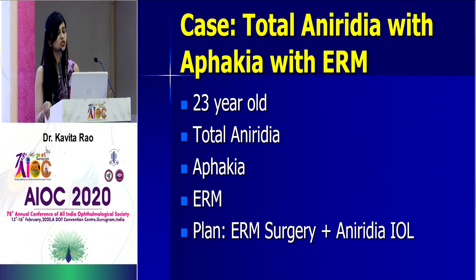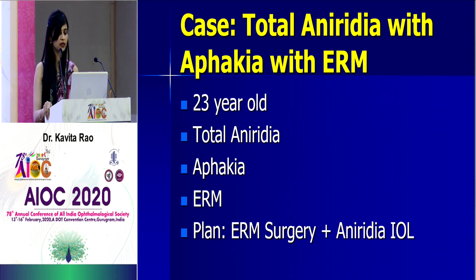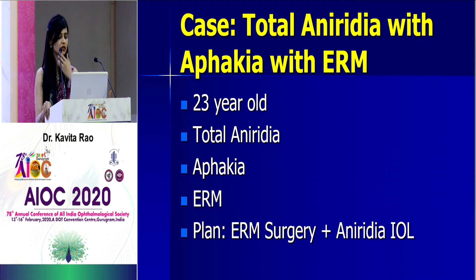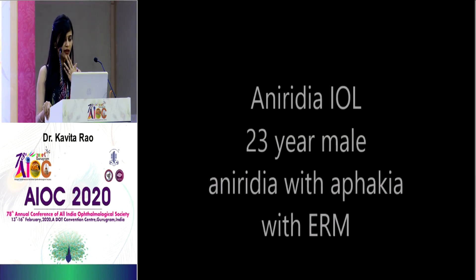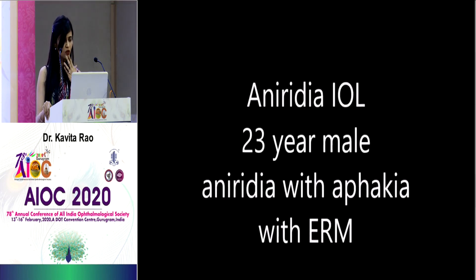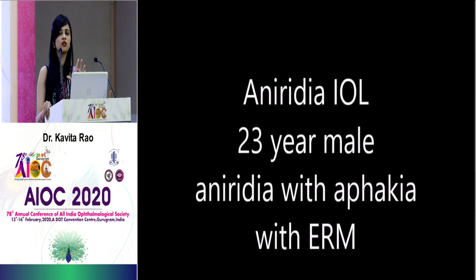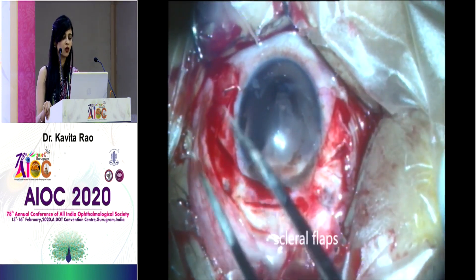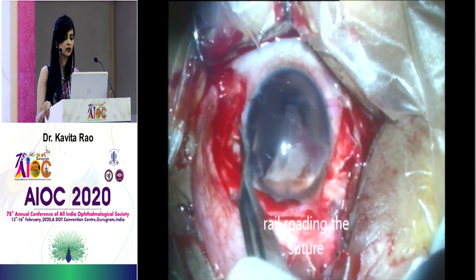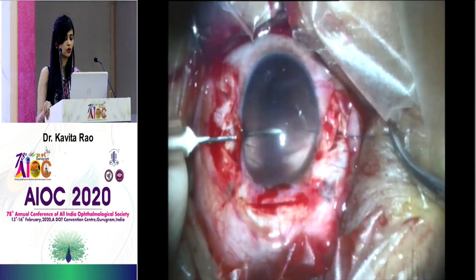The next patient came with complete total aniridia and aphakia. He had been operated elsewhere and now has an ERM. We decided to put in an aniridia IOL, which has an IOL in the center and an iris component — available in two colors, custom made. Again, I used the railroading technique for the suture.